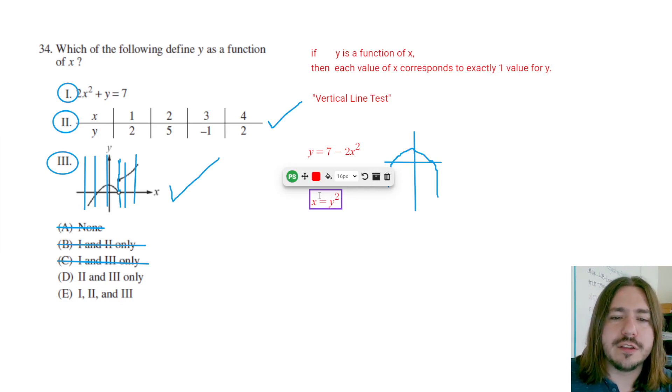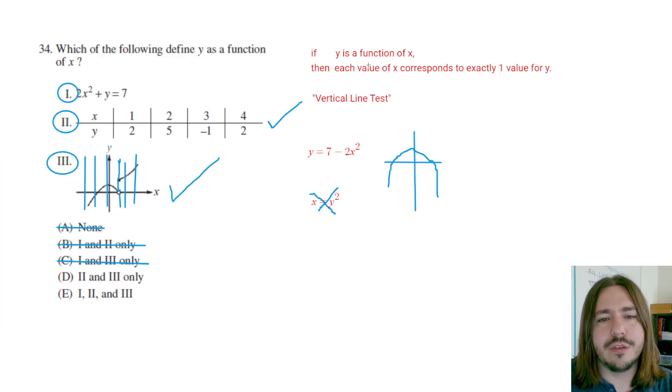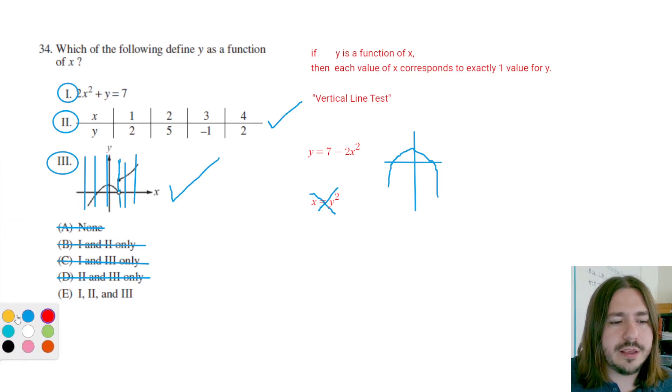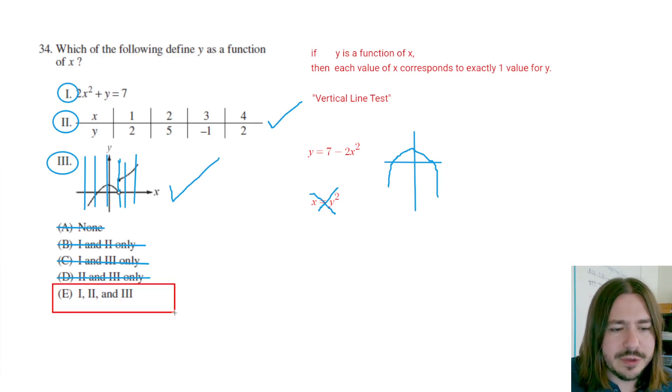So really what's going to happen is if you ever get a y squared on this, that one's not going to be a function of x. So the bottom line here is that our answer for number 34 is going to be E. All three of these end up being functions. Very nice. But yeah, it doesn't mean you have to check all three of these.